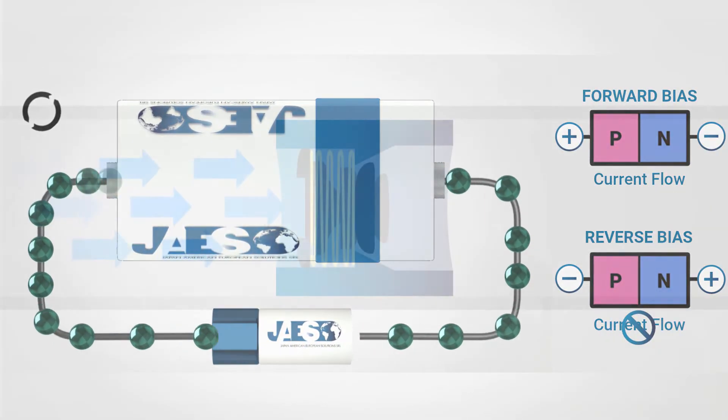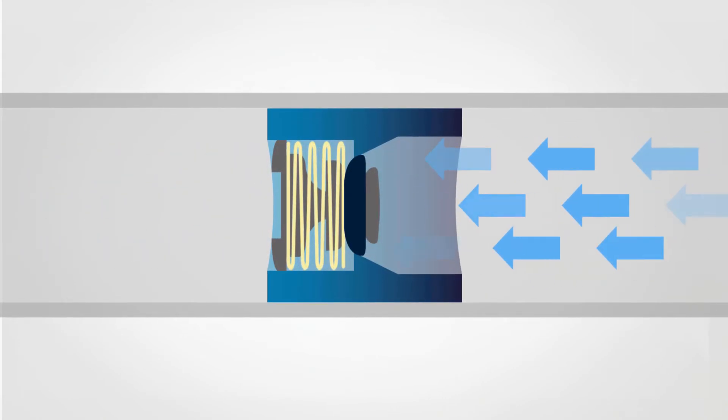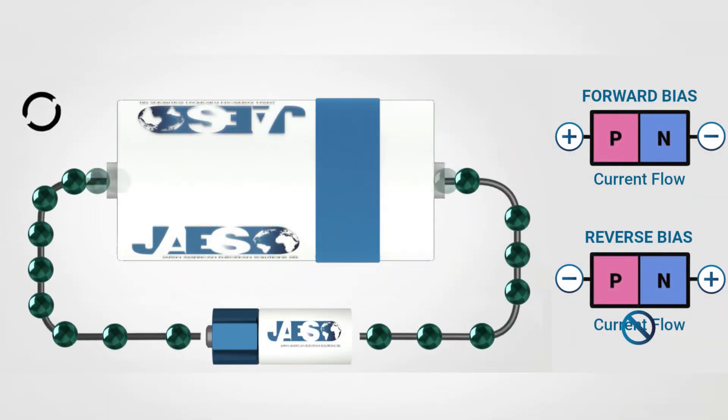In a nutshell, the diode behaves like a non-return valve, only in this case, the flow is not represented by water, but by electricity.